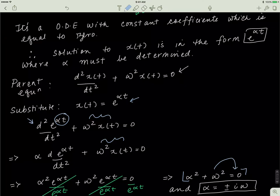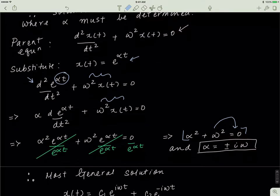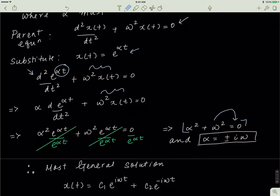If I move omega to the other side, it becomes negative omega squared. Taking the square root, remember the square root of a negative term is i, and the square root of omega squared is just omega. So I'm left with alpha equals plus or minus i·omega. That means x(t) has two solutions, but the most general solution is a linear combination of both: c1·e^(i·omega·t) plus c2·e^(-i·omega·t).